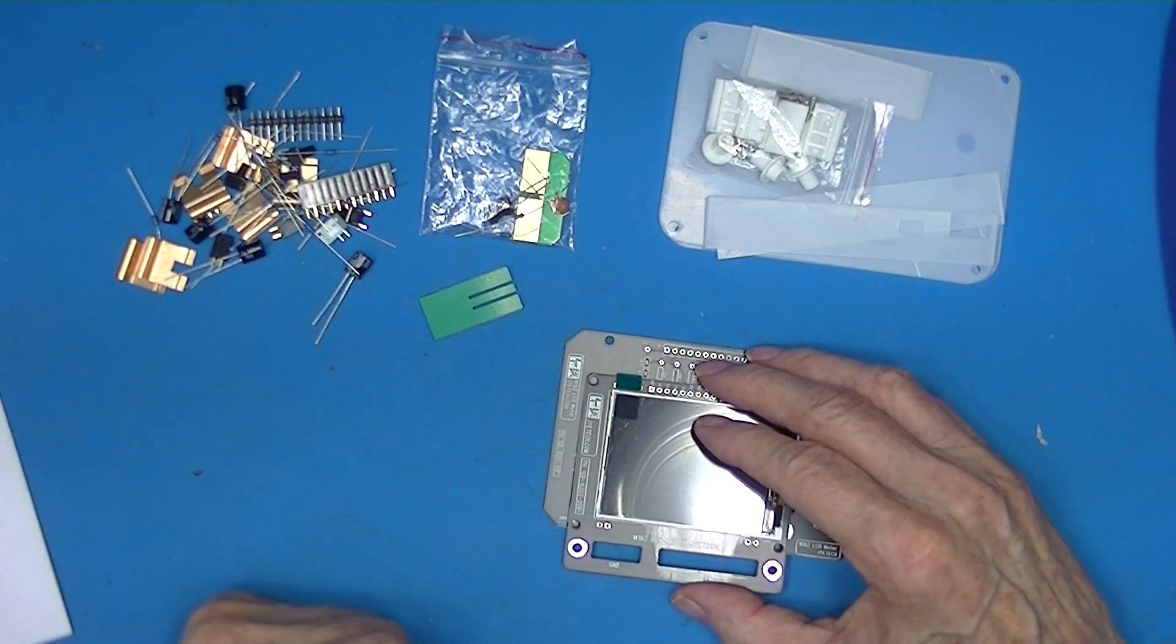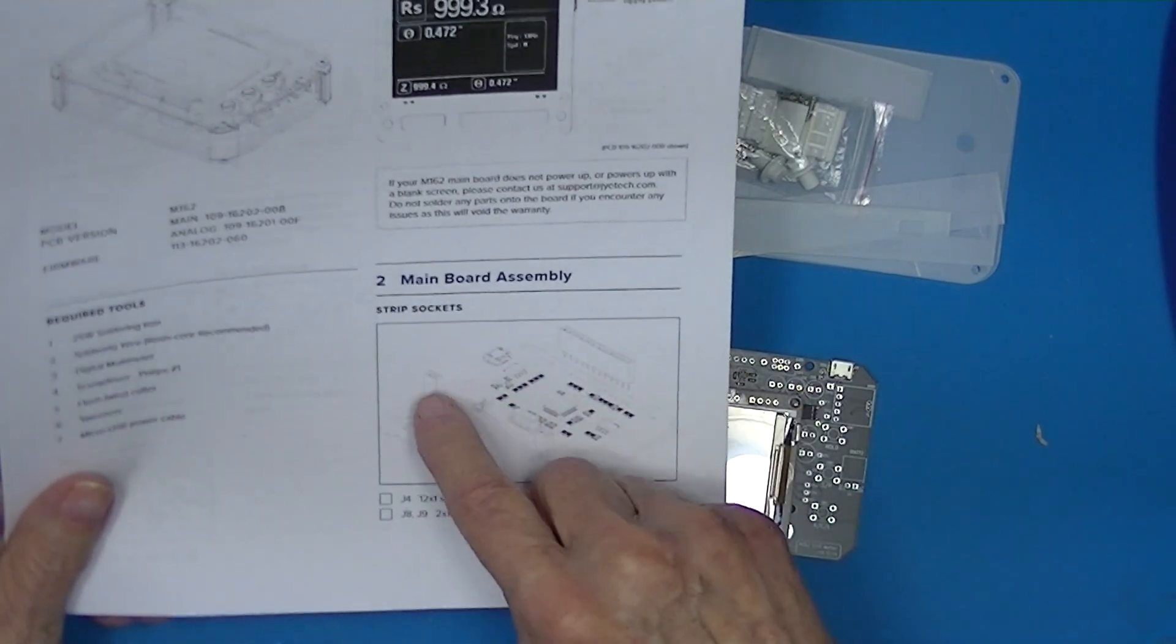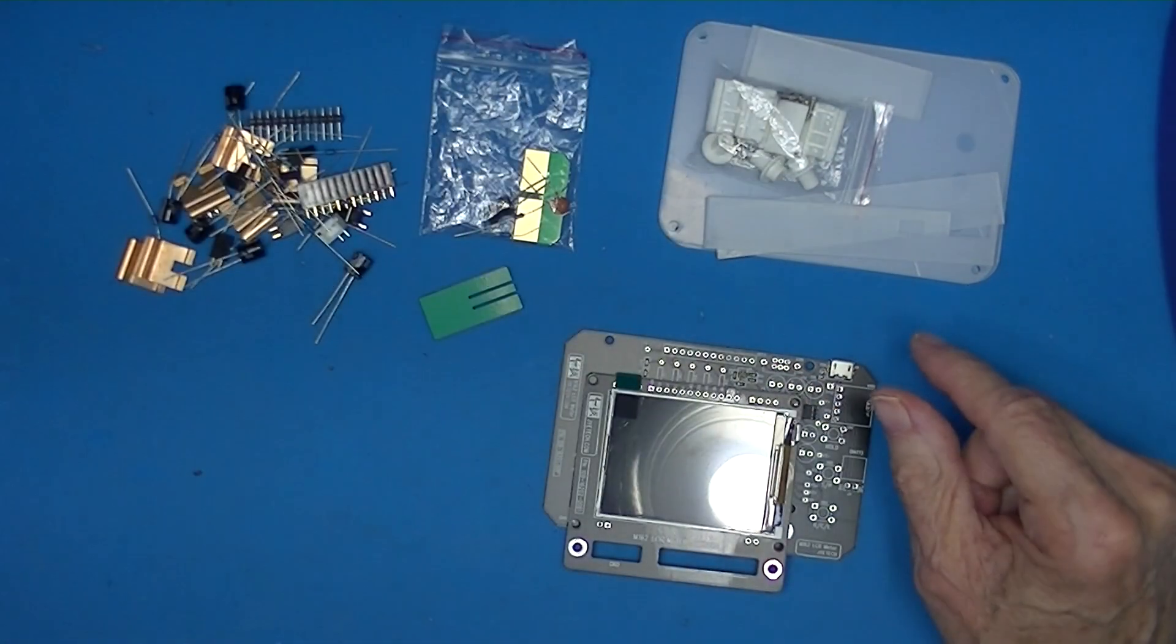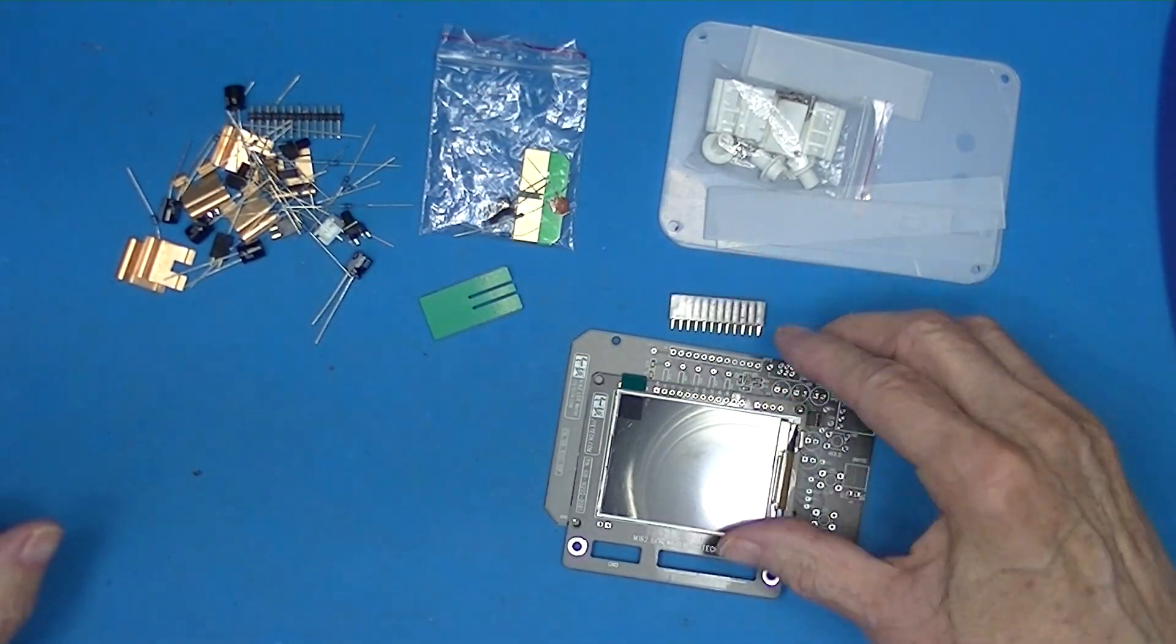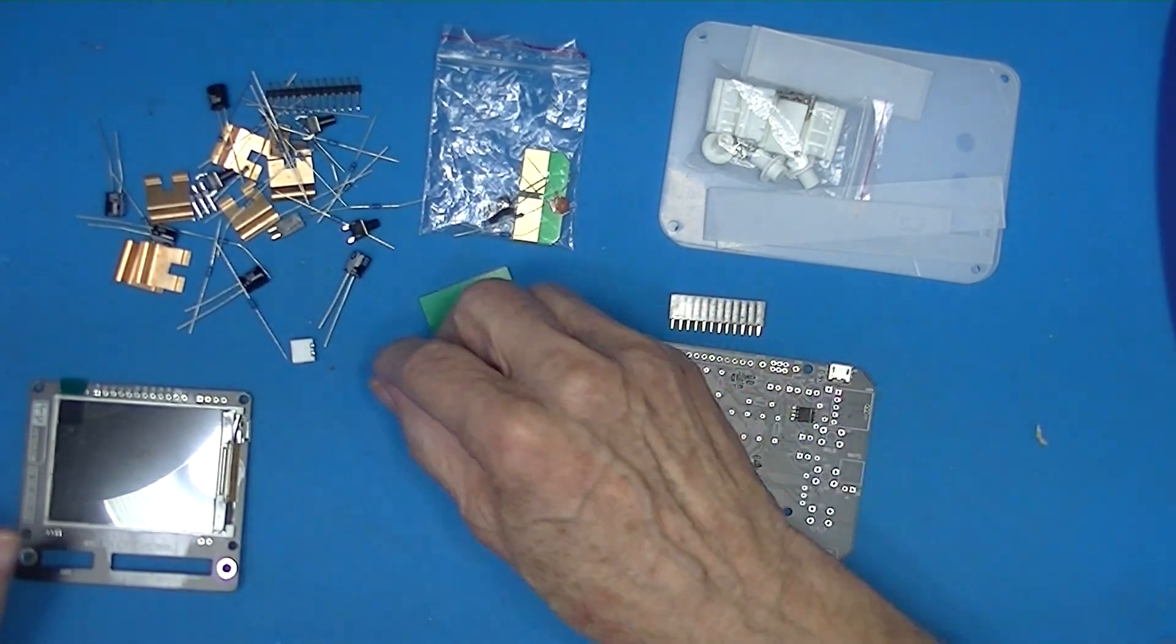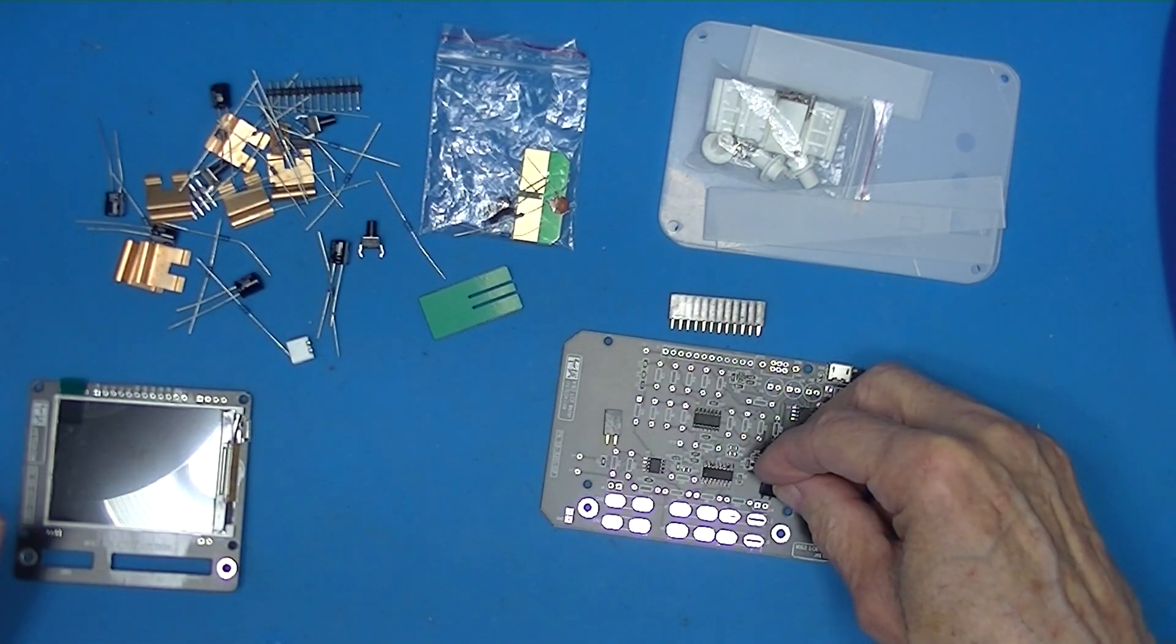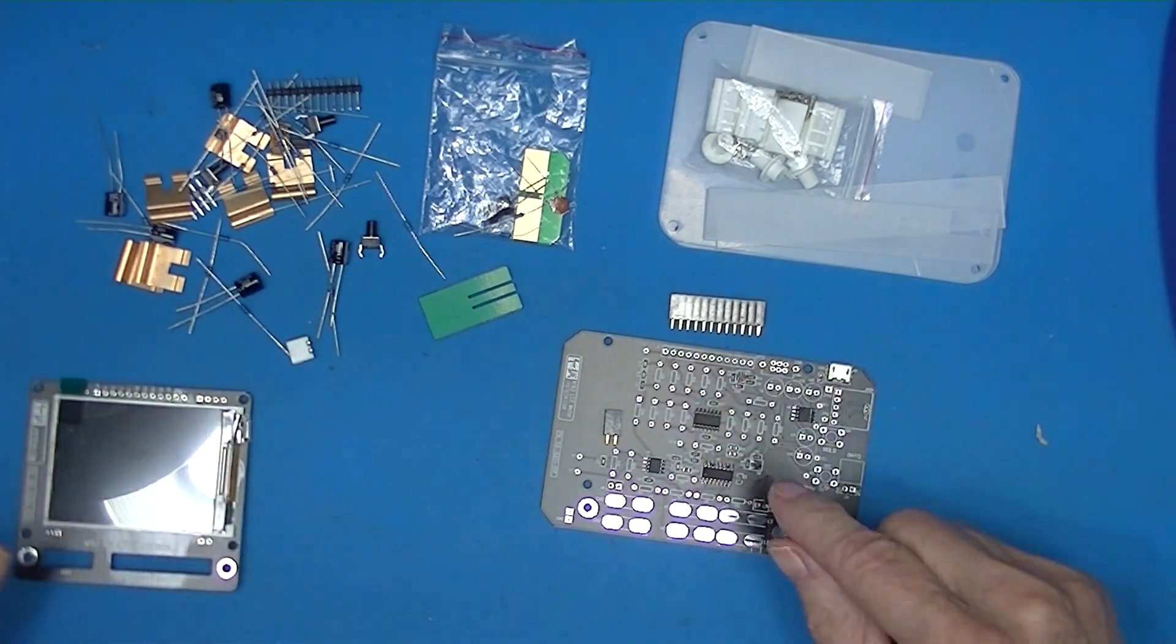And then it tells us to mount some strip sockets here, here and here. Well one of them is obvious. That's that. I guess there's one there, and one here. So I'll rearrange things and proceed to do that.